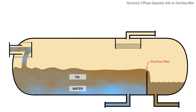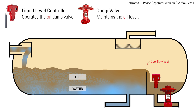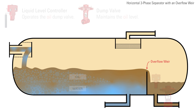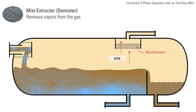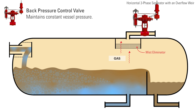The oil spills over the top of the overflow weir, and a level controller operates a dump valve to maintain the oil level in an oil bucket. Gas rises to the top of the separator and exits through a mist extractor, or de-mister, to a back pressure control valve, which maintains constant vessel pressure.